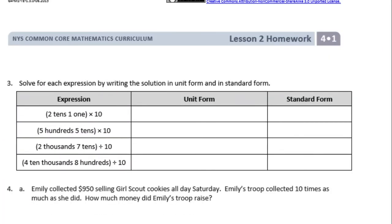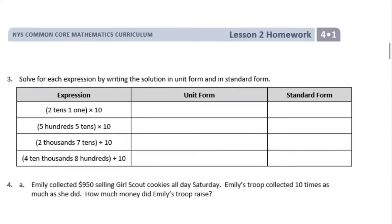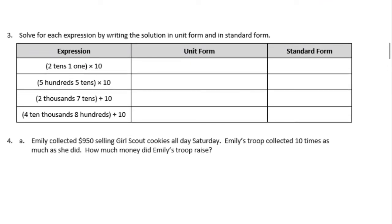Number 3: solve for each expression by writing the solution in unit form and in standard form. We have the expression two tens and one one, times ten. We're multiplying by ten, so each place value gets multiplied by ten. Two tens times ten gives us hundreds, so we have two hundreds. Ones times ten gives us tens, so we have two hundreds and one ten, which is two hundred ten.